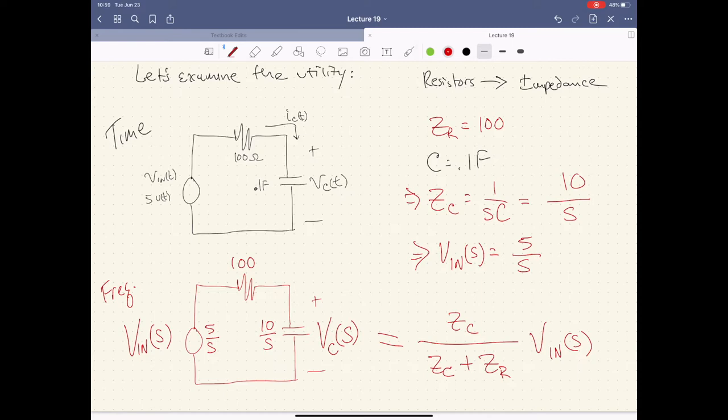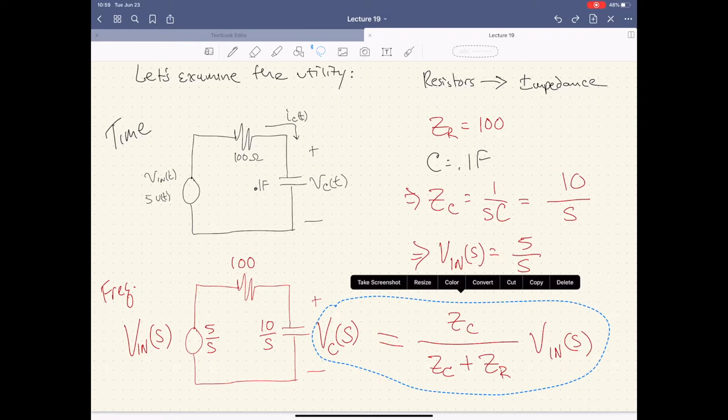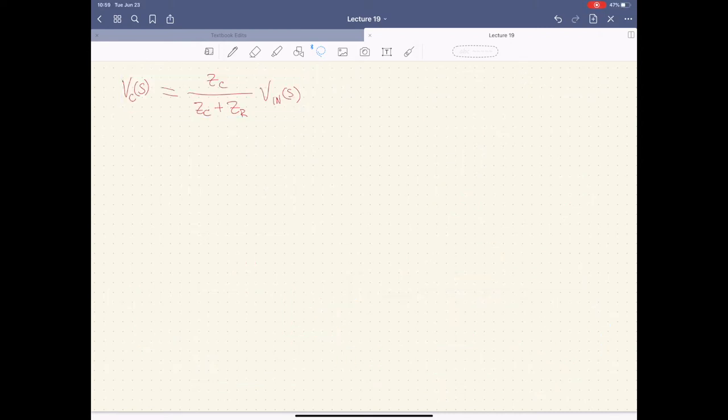Last bit we have here is the input. So VN of S in the Laplace transform of that is just going to be equal to the Laplace transform of 5 UT, which we should all know by now, this is just 5 times 1 over S. Because the Laplace transform of UT is 1 over S. So it's 5 over S.